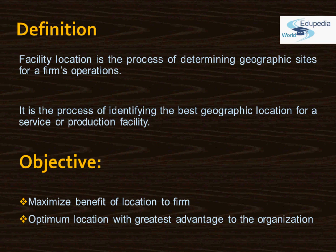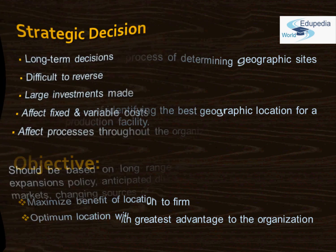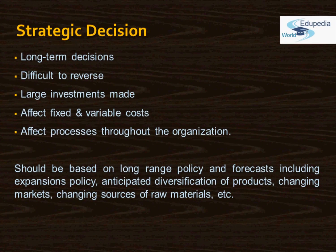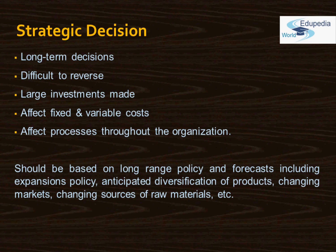The basic objective of establishing or finding a suitable location is to get the greatest advantage possible from that location. Plant location or the facility location problem is an important strategic-level decision for an organization. One of the key features of a conversion process — i.e., the manufacturing system — is the efficiency with which the products or services are transferred to the customers. This fact includes the determination of where to place the plant or facility; a facility should be placed as close as possible to the site of the customers.